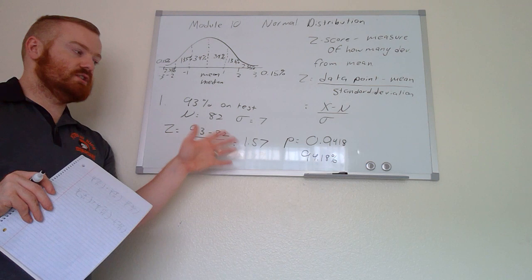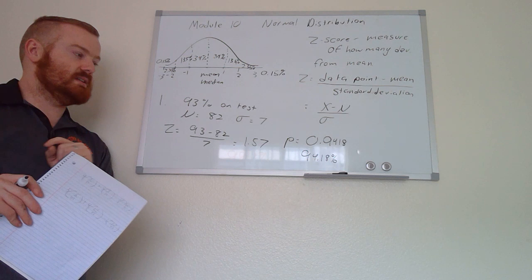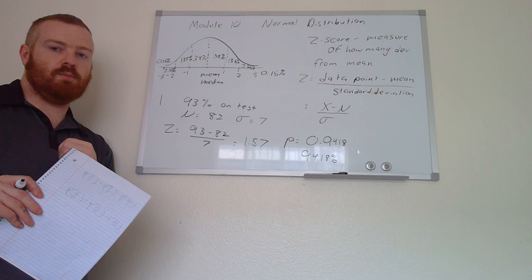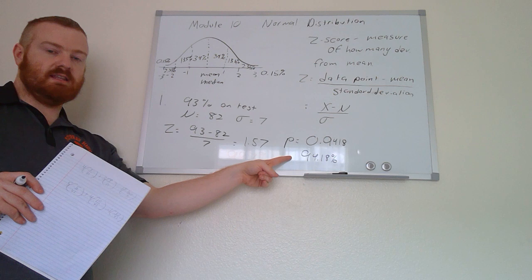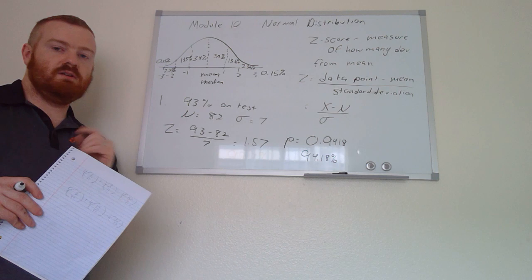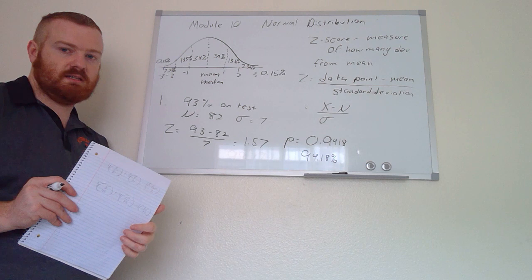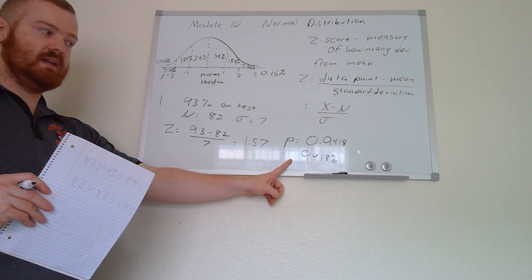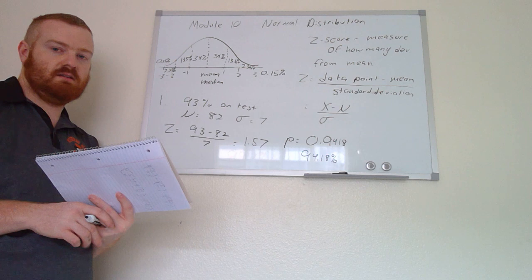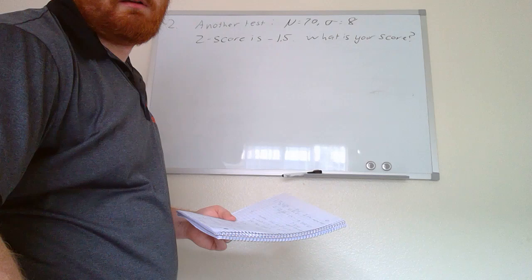Moving the decimal over twice, 0.9418 becomes 94.18%. This represents the percentile — meaning 94.18% of people who took the test either got your score or lower. Subtracting from 100 gives approximately 5.82%, so only 5.82% of people scored above you. The z-score tells you how many standard deviations above or below the mean you are, and the table tells you the exact percentile.